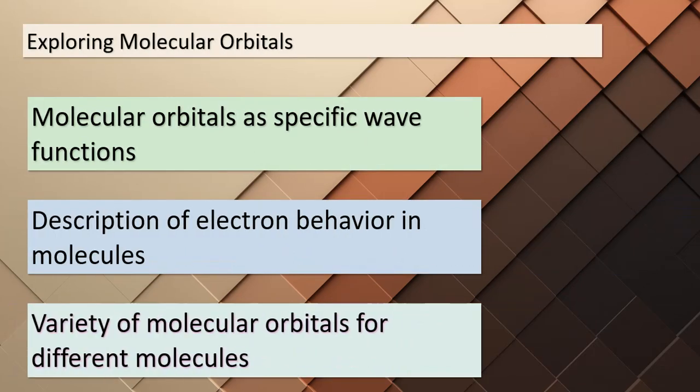It's time to unravel the beauty of molecular orbitals. These are like specialized wave functions that give us a detailed understanding of how electrons interact within molecules. Think of each molecular orbital as a unique dance floor where electrons groove to a specific rhythm. Depending on the molecule, we have a variety of these molecular orbitals, each with its own distinctive characteristics. These molecular orbitals hold the key to predicting a molecule's behavior, properties, and even its reactions with other molecules.